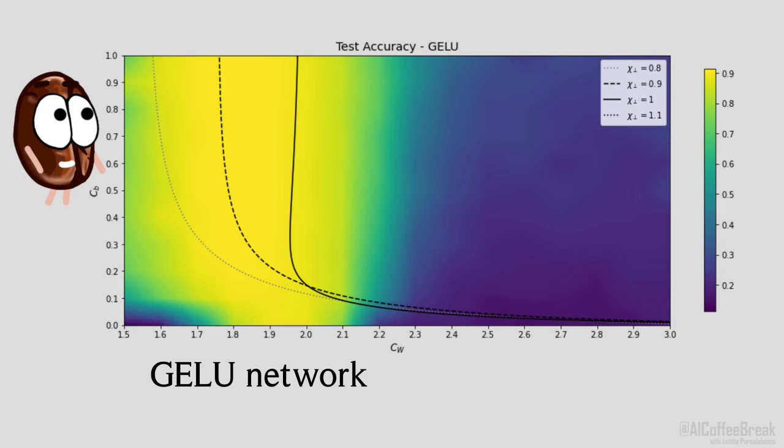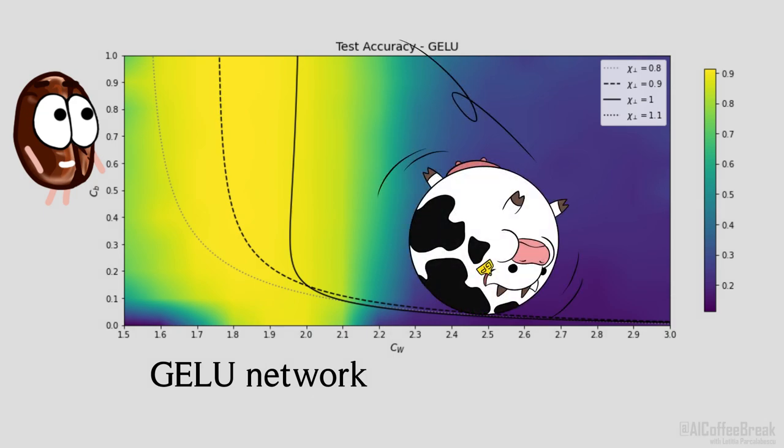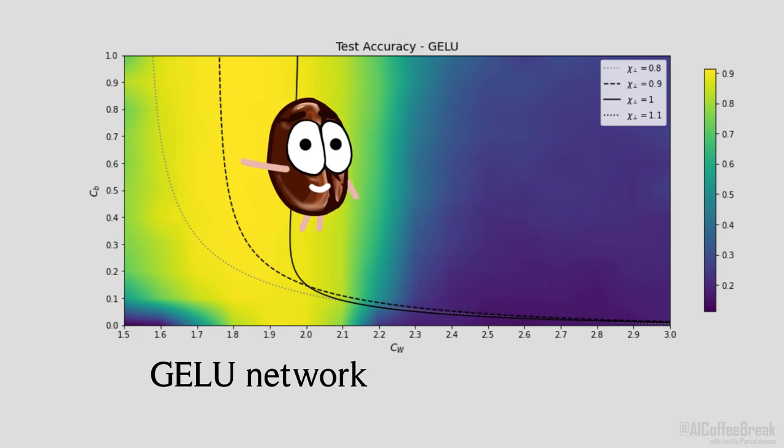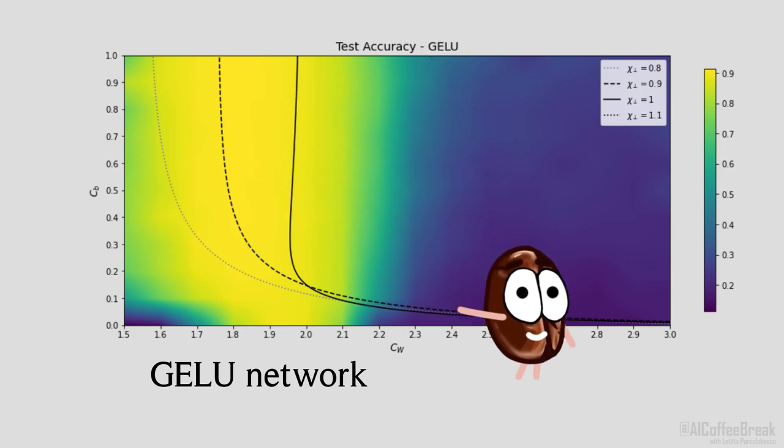For GELU, we see again that the accuracy is strongly correlated with the perpendicular susceptibility. On the left side, the lines coincide with the yellow region. On the right side, however, the lines move into the low accuracies. This is an area of quickly changing susceptibility, causing this to be an unstable region.